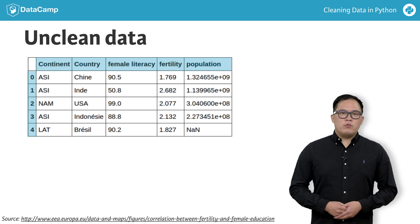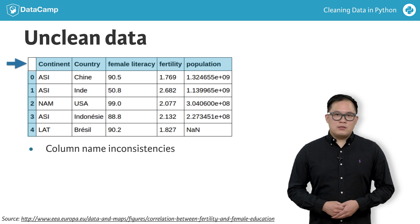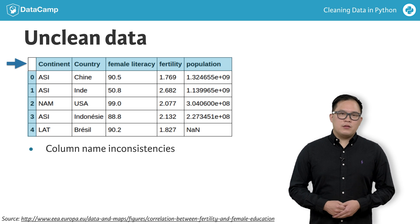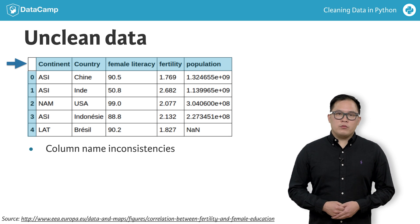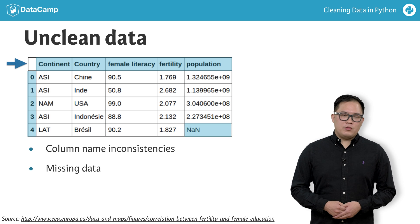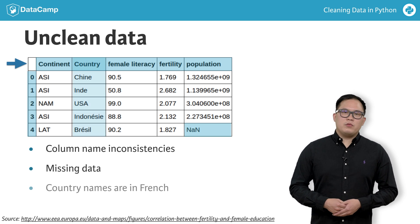Looking at the first few rows can identify some of the common data problems already. We have some column name inconsistencies — Country and Continent are capitalized, and Female Literacy has a space in it. There is also missing data, which is data not present for whatever reason, represented as NaN values. And the country names are in French.